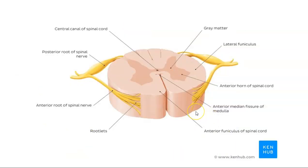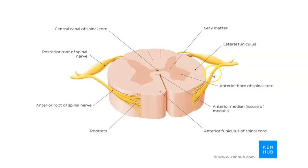Here's another cartoon image that helps you see the anterior median fissure and the posterior median sulcus fairly well. You can also see these little rootlets coming out — this forms the ventral root, this is the dorsal root, this is the dorsal root ganglion, and this is the spinal nerve — of which you have 31 pairs.